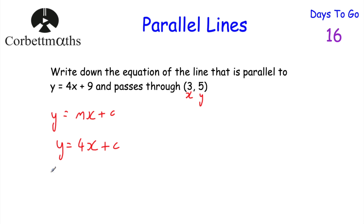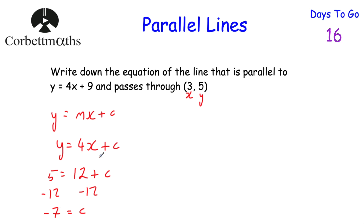So y is 5: 5 equals 4 times x. X is 3, so 4 times 3 is 12, giving us 5 equals 12 plus c. We want to find c, so we subtract 12 from both sides. 5 take away 12 is minus 7, so c equals minus 7. We replace c with minus 7, giving us y equals 4x minus 7. The equation of the straight line that's parallel to y equals 4x plus 9 and passes through the point 3, 5 is y equals 4x minus 7. And if you got that, well done.